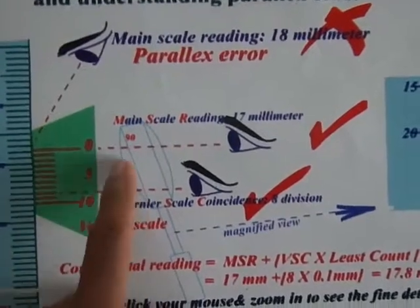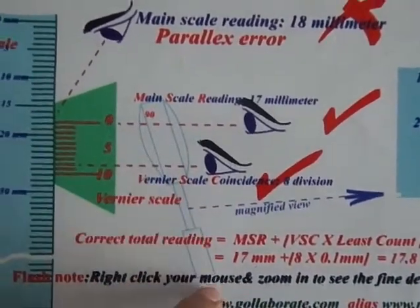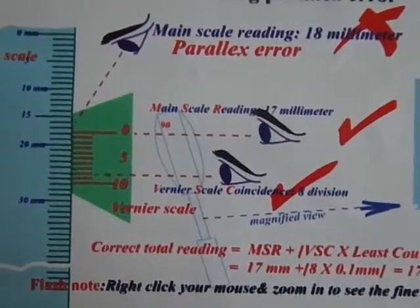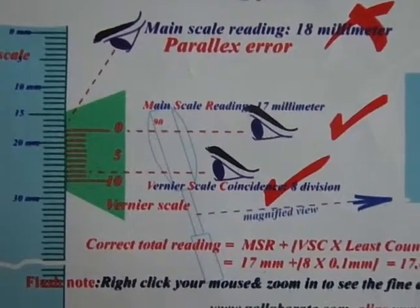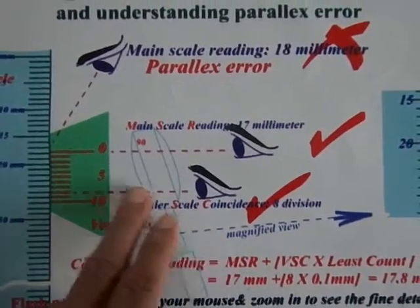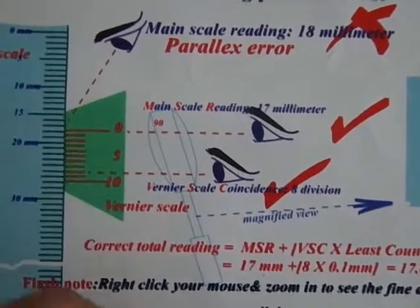In case if the view is not clear one can use a magnifying lens, especially in the case of a traveling microscope. The perspective of view should be perpendicular to the plane where we want to measure. That will be better.